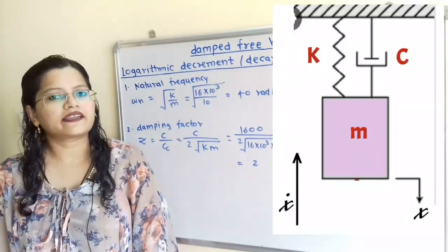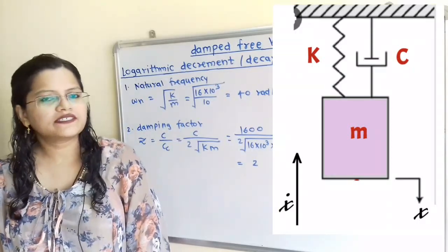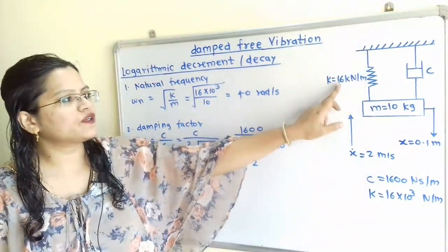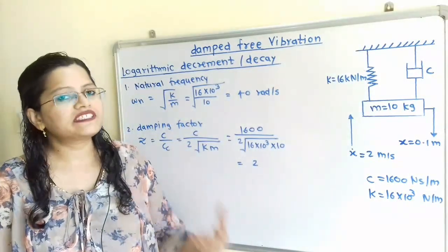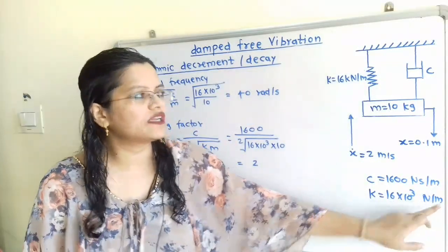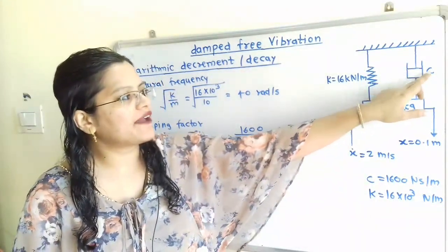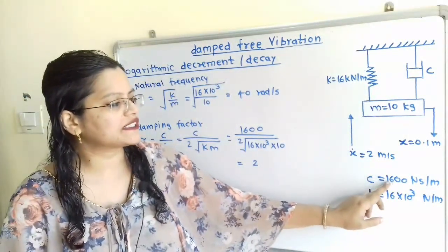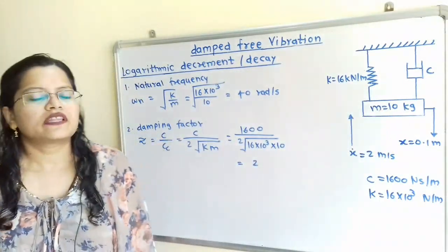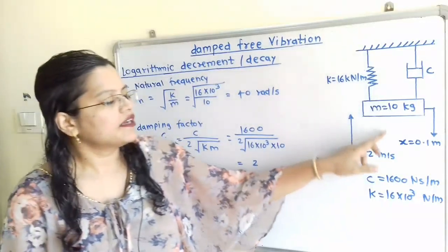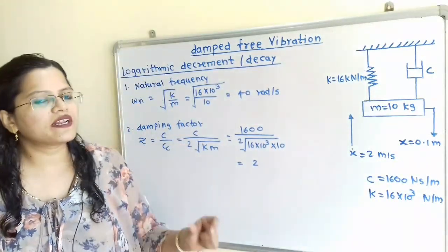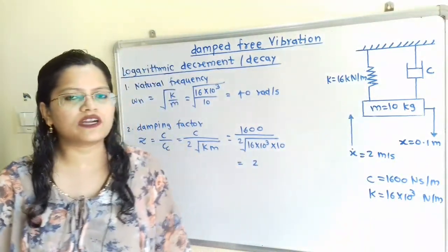Let us understand the given data with the help of a diagram. This is the spring-mass and dashpot system. The spring has stiffness K equal to 16 kN per meter, but the standard unit is Newton, so K equals 16,000 N per meter. The dashpot has damping coefficient C equal to 1600 Ns per meter, and mass equals 10 kg. Initially, the mass is displaced a distance x equal to 0.1 meter in the downward direction.